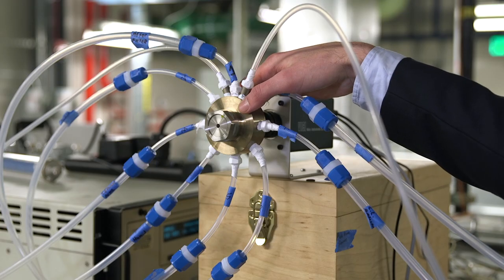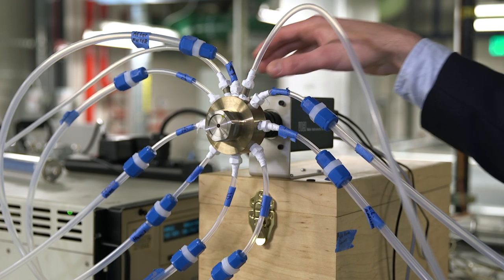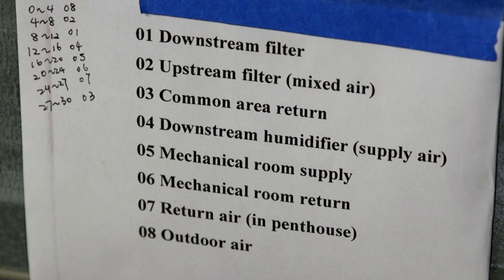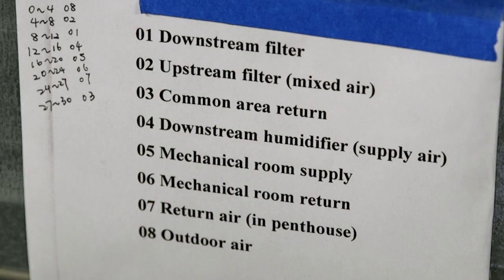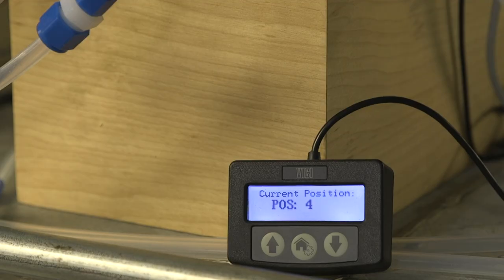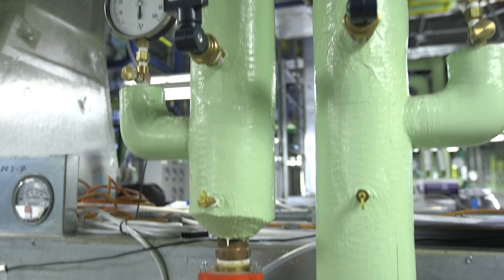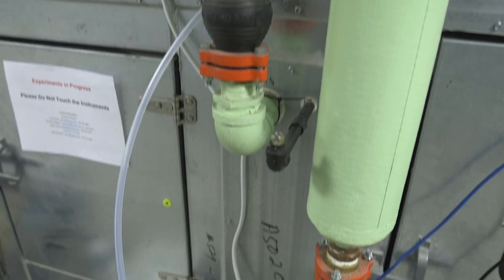So this valve system allows us to track how the concentrations vary in space. Each of these Teflon tubes go to different sampling locations in the ventilation system and then we switch these different locations. We sample the air at that location and then we can see how the building ventilation system affects the dynamics of these indoor air pollutants.